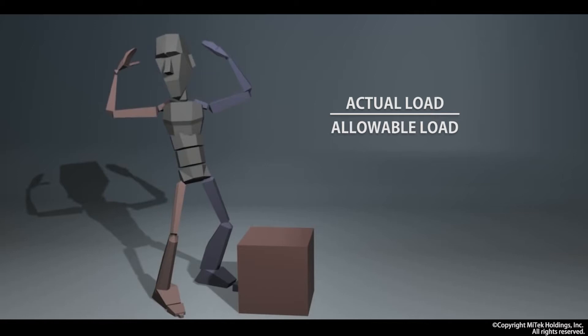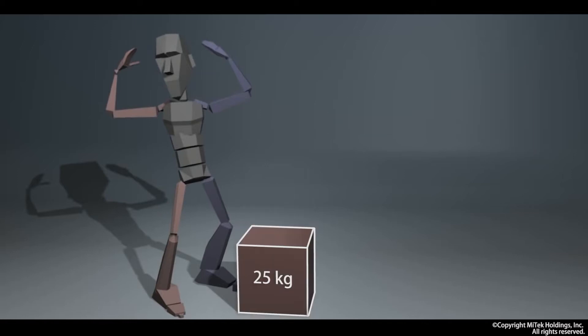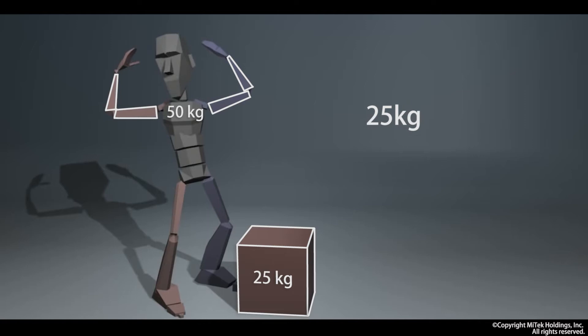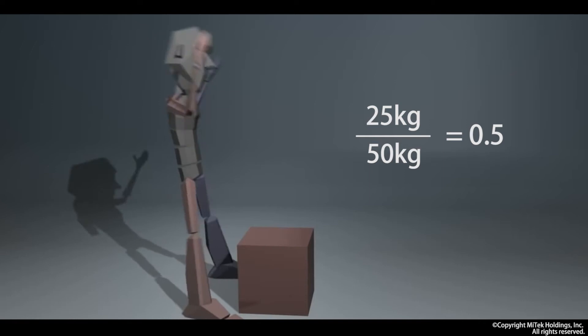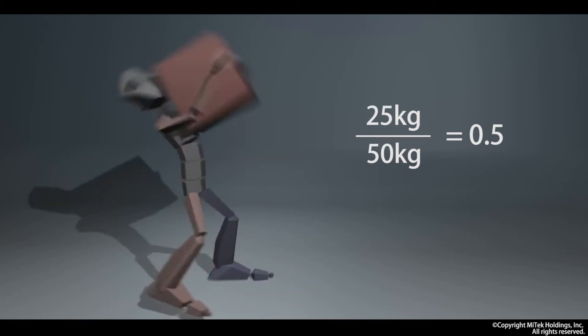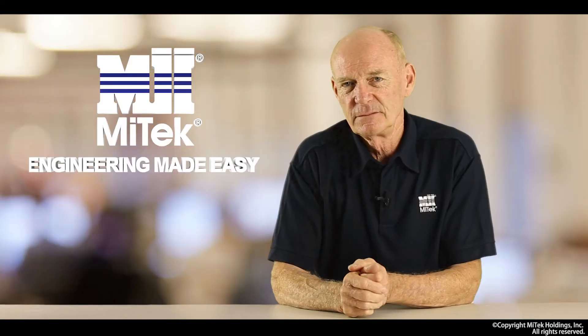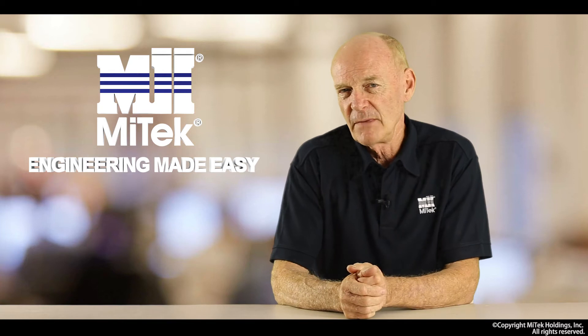Let's take a 25 kg weight, and say I'm perfectly capable of lifting a 50 kg weight. The simple formula is the actual load — 25 kg — divided by my allowable load — how strong I am — 50 kg. The answer is 0.5, well below 1, so we have a correct calculation.